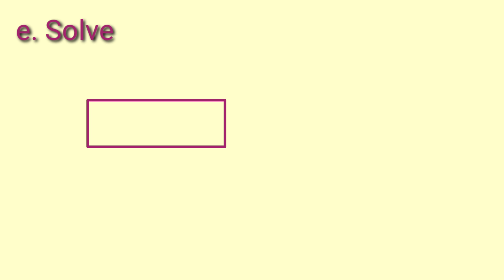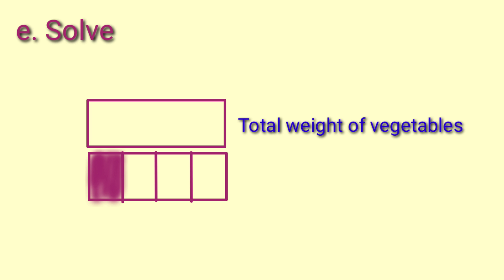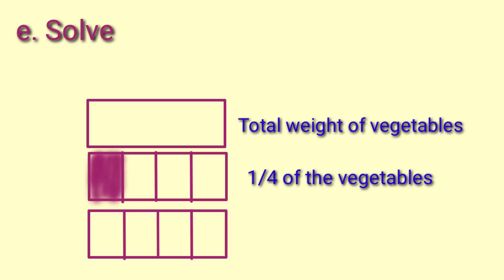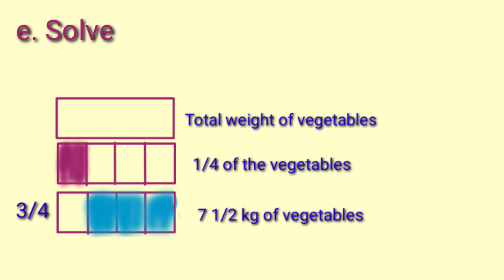Let's draw a fraction model. The whole represents the total weight of vegetables. Divide the whole into four equal parts, then shade one part to show one fourth of the vegetables. The three unshaded parts represent the seven and one half kilograms of vegetables that the farmer sold. So three fourths equals seven and one half kilograms. We need to find how many kilograms is one fourth so we can add it to seven and one half to get the total weight.